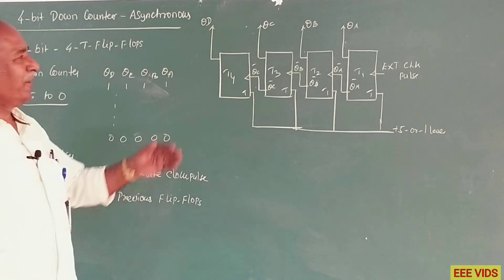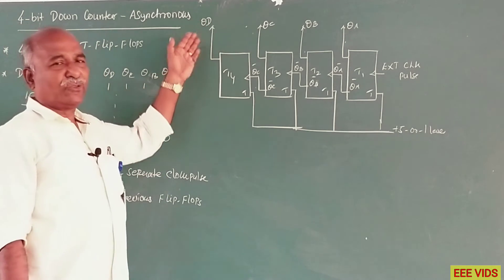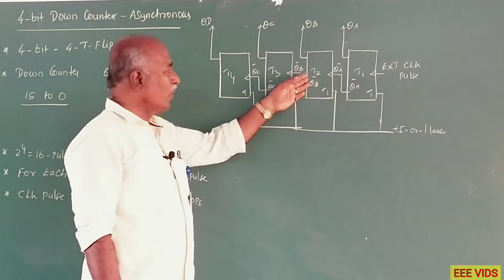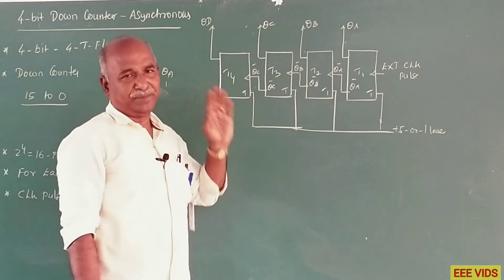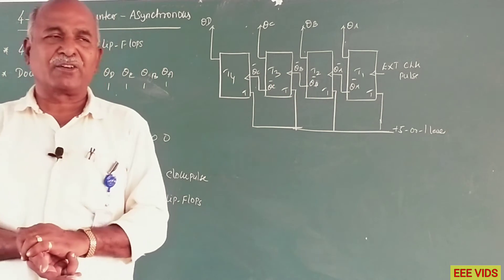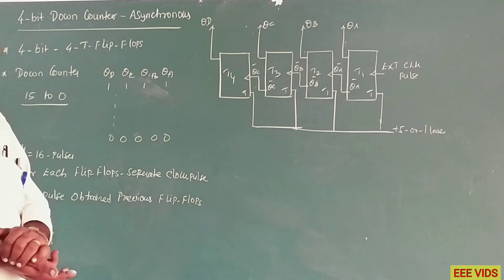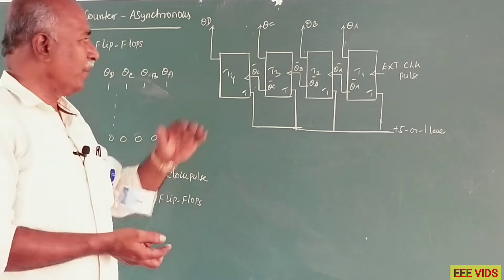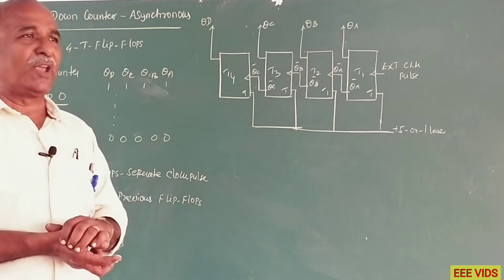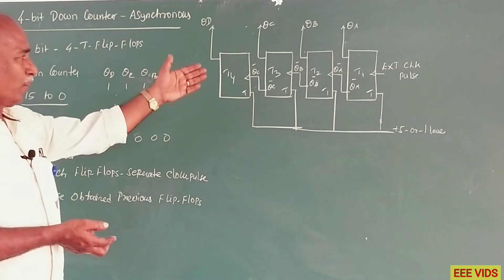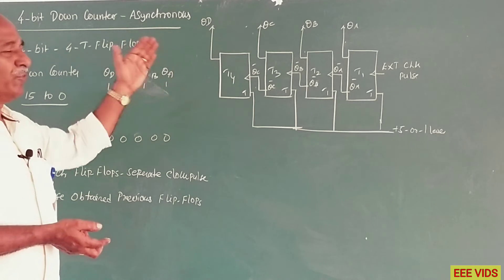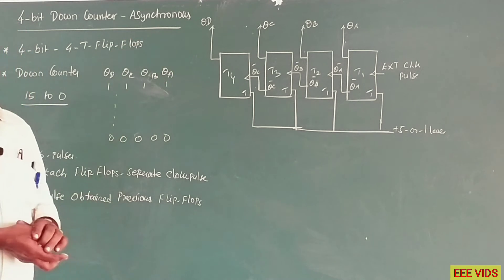Let's check the initial state: the output is 0, 0, 0, 0. The complement of this is 1, 1, 1, 1. So initially all clock pulses would be 0, and the complement of 0 gives QA bar = 1, QB bar = 1, QC bar = 1, QD bar = 1.